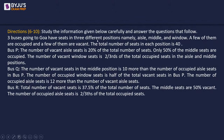The next set: study the information given below and answer the questions. Three buses going to Goa have seats in three different positions — aisle, middle, and window. A few are occupied and a few are vacant. The total number of seats in each position is 40. Bus P: vacant aisle seats are 20% of the total seats. Only 50% of middle seats are occupied. Vacant window seats are two-thirds of the total occupied seats in the aisle and middle positions.